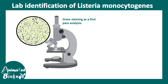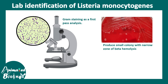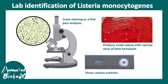For the lab diagnosis of Listeria monocytogenes, the first-pass analysis is gram-staining. They should stain dark purple and one can see clear rod-like structures. They would produce small colonies with a narrow zone of beta-hemolysis on a blood agar plate. They would also be catalase positive.